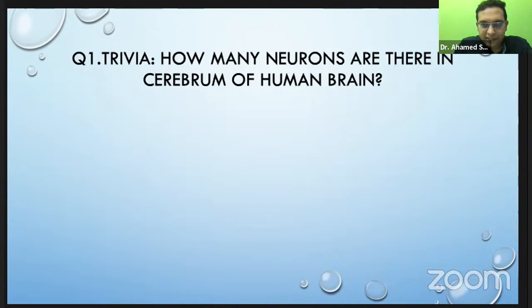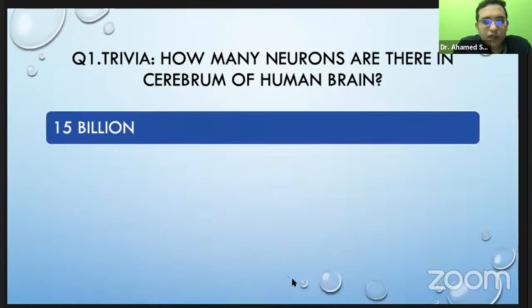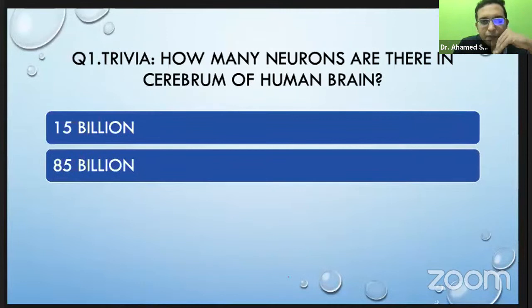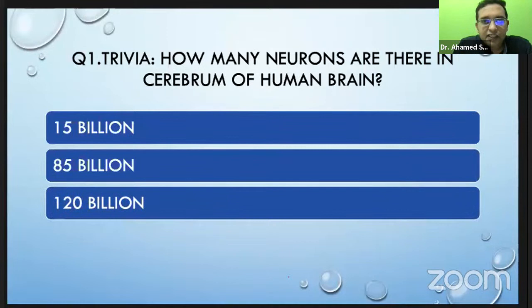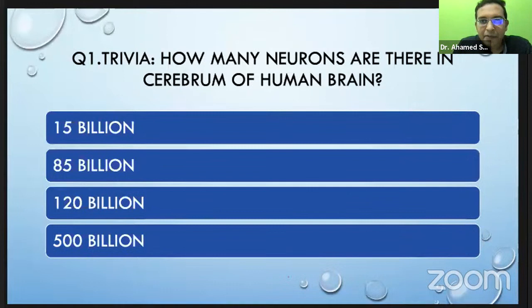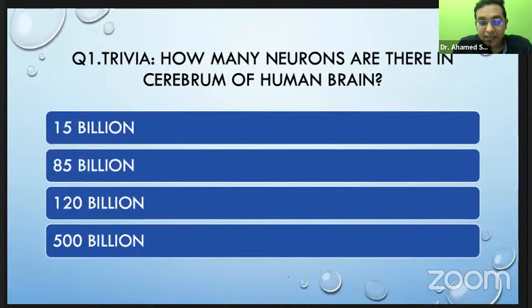Let's start this dementia module. Dementia is not that easy, so let's make it interesting and interactive with a question-and-answer session. I have put up a poll question: How many neurons are there in the cerebrum of the human brain? This is a tricky, mind-bending question. You know that in stroke, about 1.2 million neurons — not billion — are getting damaged each minute. So how many total neurons are there in the cerebrum of the human brain?